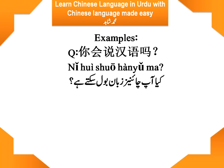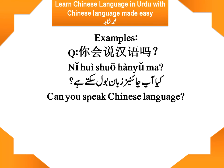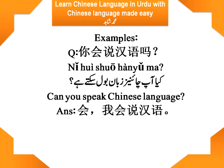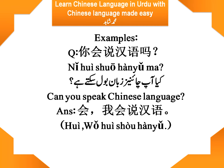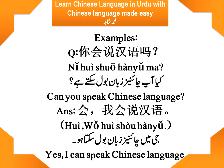Can you speak Chinese language? If you want to respond that you can, then you respond: 会. 我会说汉语. I can speak Chinese language. 会 means 'can,' so here we take it as a yes — 我会说汉语. Yes, I can speak Chinese language. Now we will learn how to make negative sentences with 不会.